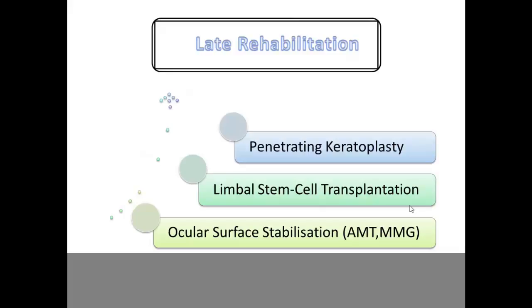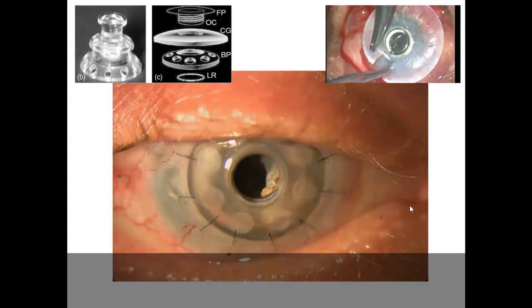For penetrating keratoplasty: a healthy limbus must first be established through limbal transplantation before keratoplasty is planned. A blank keratoplasty with a damaged limbal surface will not serve the purpose. The keratoplasty can be done in the same setting as limbal transplantation or after waiting three months.